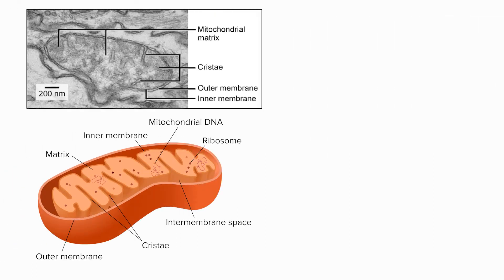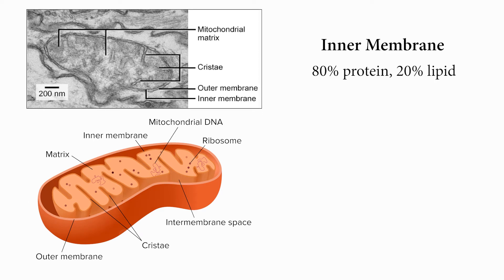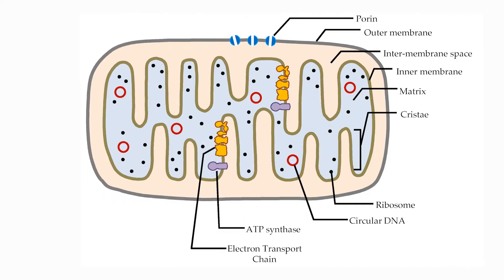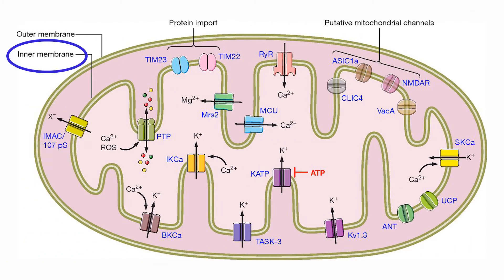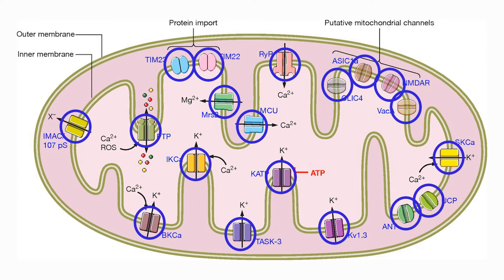The inner membrane, however, is largely protein, with only 20% being lipid. This inner membrane is more complicated and is folded into a series of cristae to create more surface area within the organelle, thereby increasing the functional capacity. The inner membrane is also more tightly regulated, as it requires proteins to traffic molecules in and out of the membrane, making it far less permeable than the outer membrane.